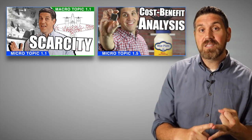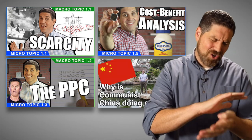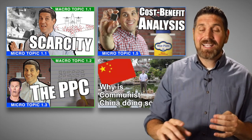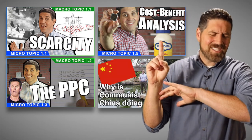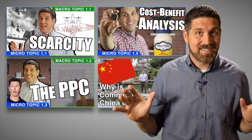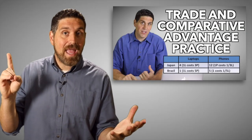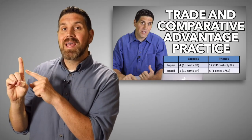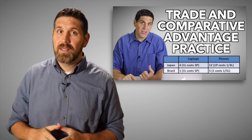Hey econ students, this is Jacob Clifford. In your AP or introductory college-level economics class, Unit 1 concepts are the easiest to learn. You learn about scarcity and opportunity cost, the production possibilities curve, and economic systems — all easy — except for one thing. For a lot of students, it's the hardest thing in the entire class: trade, comparative advantage, and terms of trade. So here are five hacks for comparative advantage that you definitely need to know.